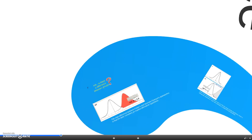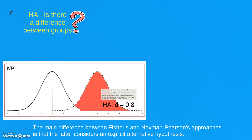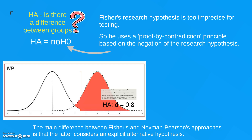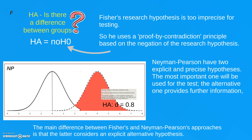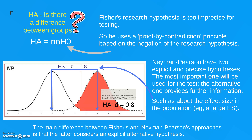Let's see how this creates confusion. We know that the main difference between Fisher's and Neyman-Pearson's approaches is that Neyman-Pearson considers an explicit alternative hypothesis. Fisher's research hypothesis is too imprecise for testing, so he uses a proof-by-contradiction principle based on the negation of this research hypothesis — the null hypothesis. While Neyman-Pearson has two explicit and precise hypotheses. The most important one is used for the test, while the alternative hypothesis provides further information, for example about the effect size in the population.